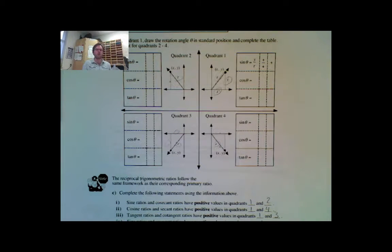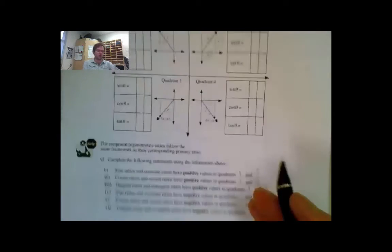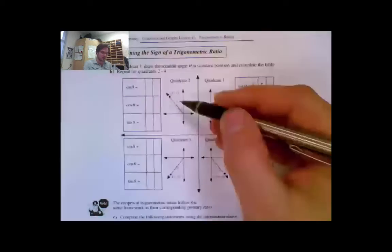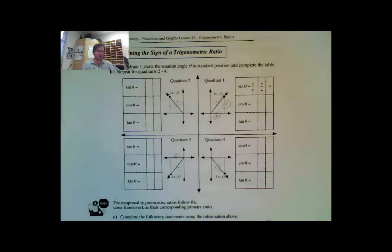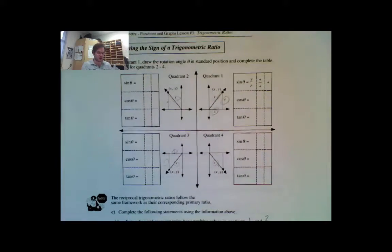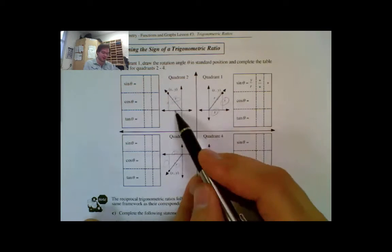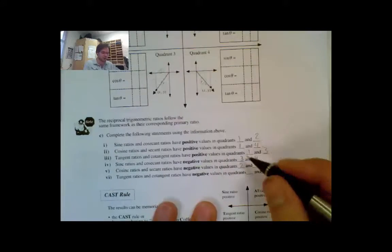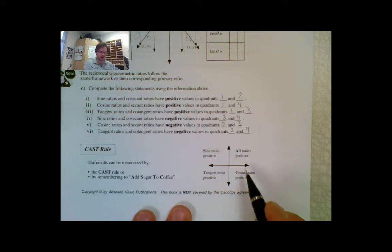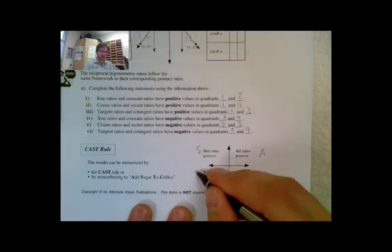Where are sine ratios negative? That's where my y values are negative — quadrant 3 and quadrant 4. Where are cosine ratios negative? That's where x values are negative — quadrant 2 and quadrant 3. Where are tangent ratios negative? We must have different signs for x and y. In quadrant 4, x is positive and y is negative; in quadrant 2, x is negative and y is positive. So tangent is negative in quadrants 2 and 4. From this we get the famous CAST rule: Cosine positive, All positive, Sine positive, Tangent positive — C-A-S-T.